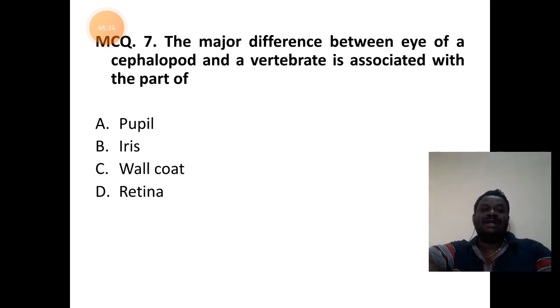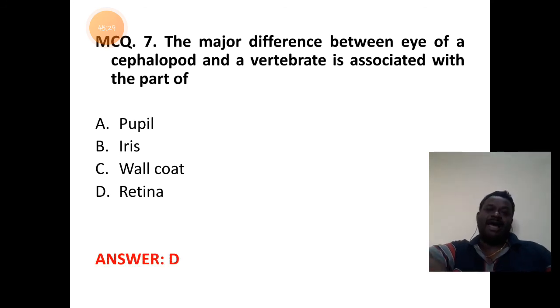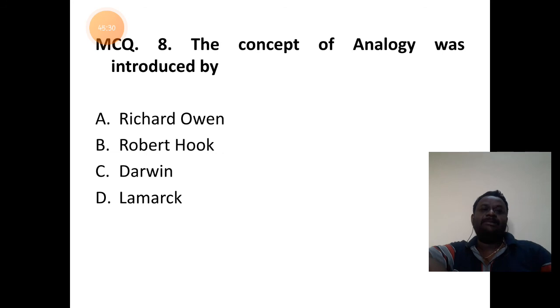Is it pupil, iris, valkut, or retina? It is the retina because it has opposite reverse arrangement of layers. Answer is D.